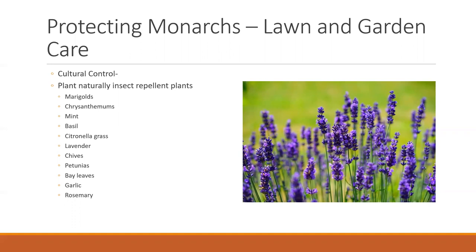Petunias add color to your yard while repelling asparagus beetles, leafhoppers, various kinds of aphids, tomato worms, and a variety of other pests — lots of people like to use them because they're so lovely and you can plant them just about anywhere. Bay leaves will repel flies, and if you have a roach problem you can use them to deter roaches in your kitchen. Garlic deters Japanese beetles, root maggots, carrot root flies, codling moths, and can be planted near roses to repel aphids. Rosemary is another really good one — I grow a lot of it and plant it around the base of my vegetable plants to keep insects away.